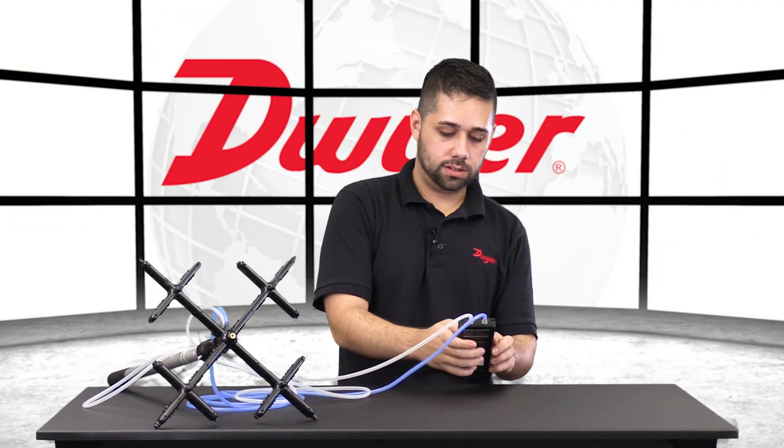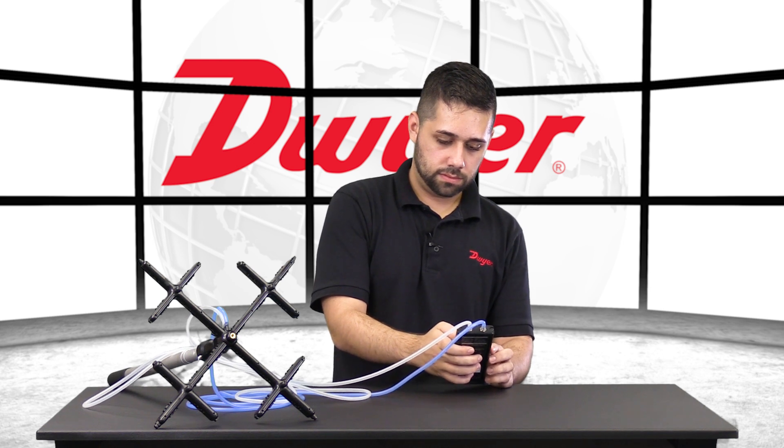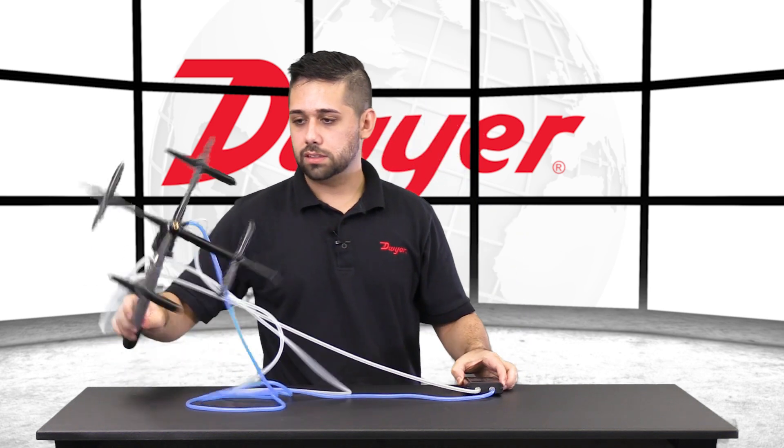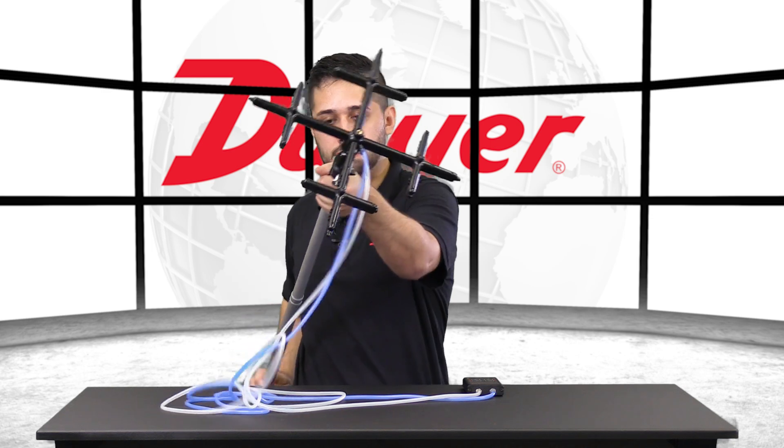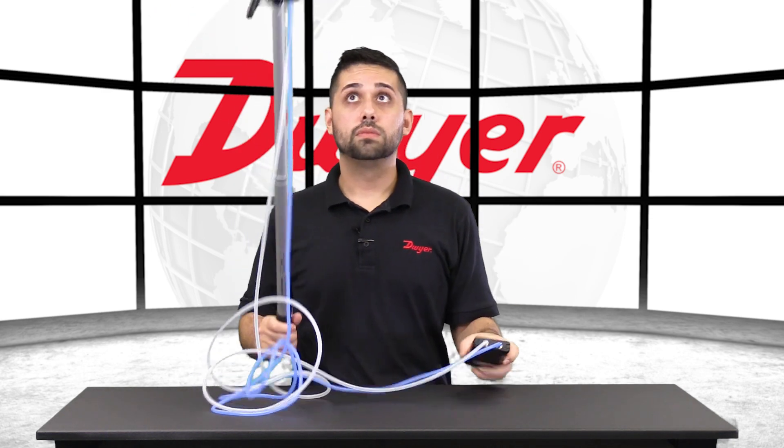Once connected, we should zero the unit. And let's extend our pole upward. Now we should be able to take an accurate measurement.